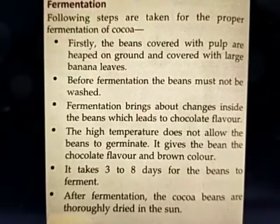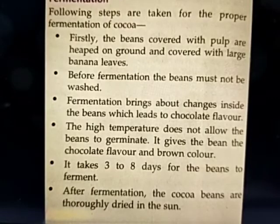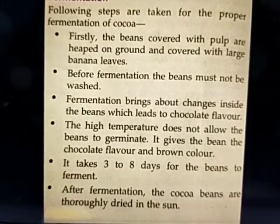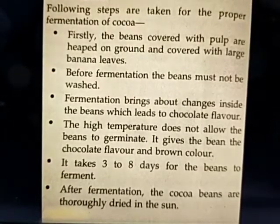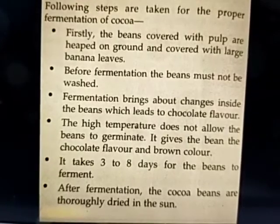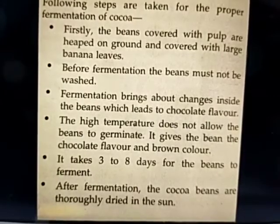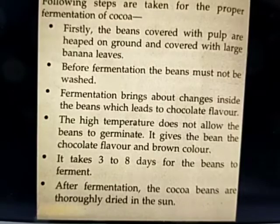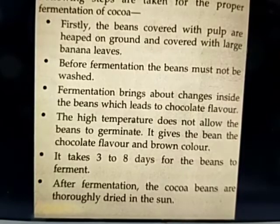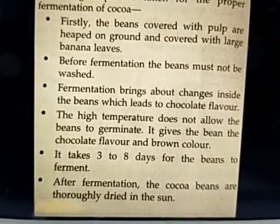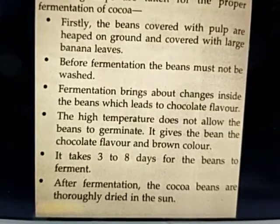Fermentation: the following steps are taken for the proper fermentation of cocoa. First, the beans covered with pulp are heaped on the ground and covered with large banana leaves. Second, before fermentation, the beans must not be washed. Fermentation brings about changes inside the beans which leads to the chocolate flavor. The high temperature does not allow the beans to germinate, and it gives the beans the chocolate flavor and brown color. It takes 3 to 8 days for the beans to ferment. After fermentation, the cocoa beans are thoroughly dried in the sun.